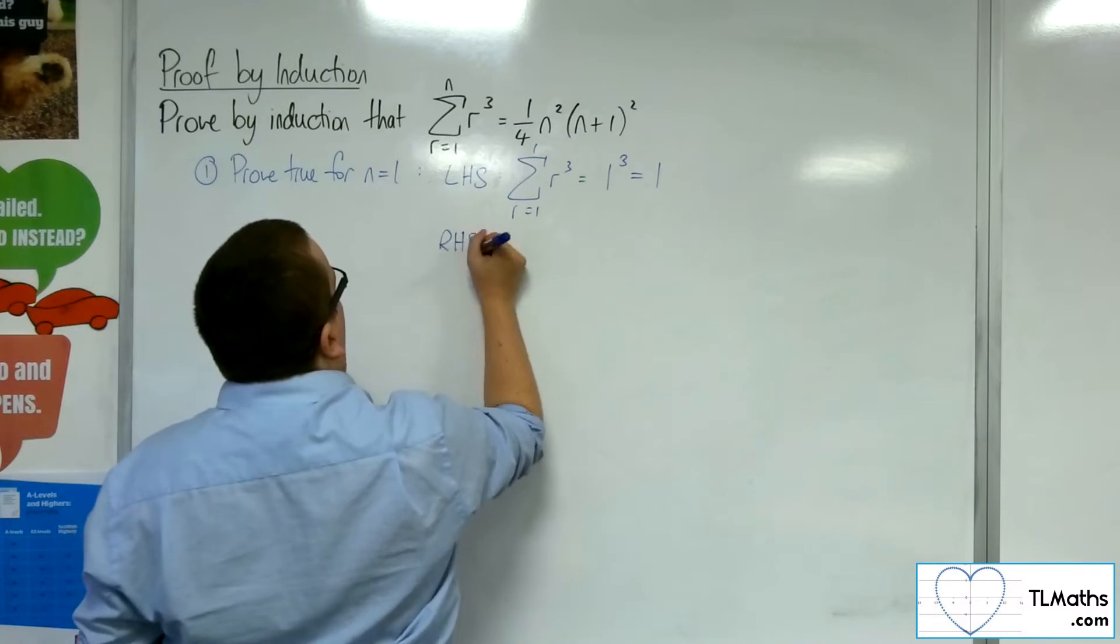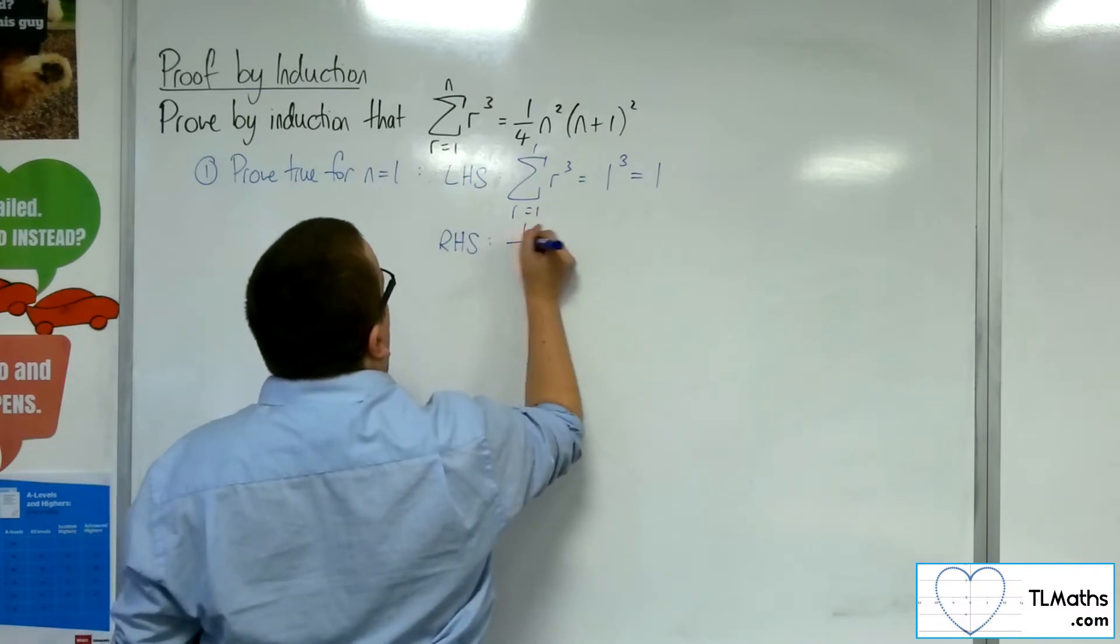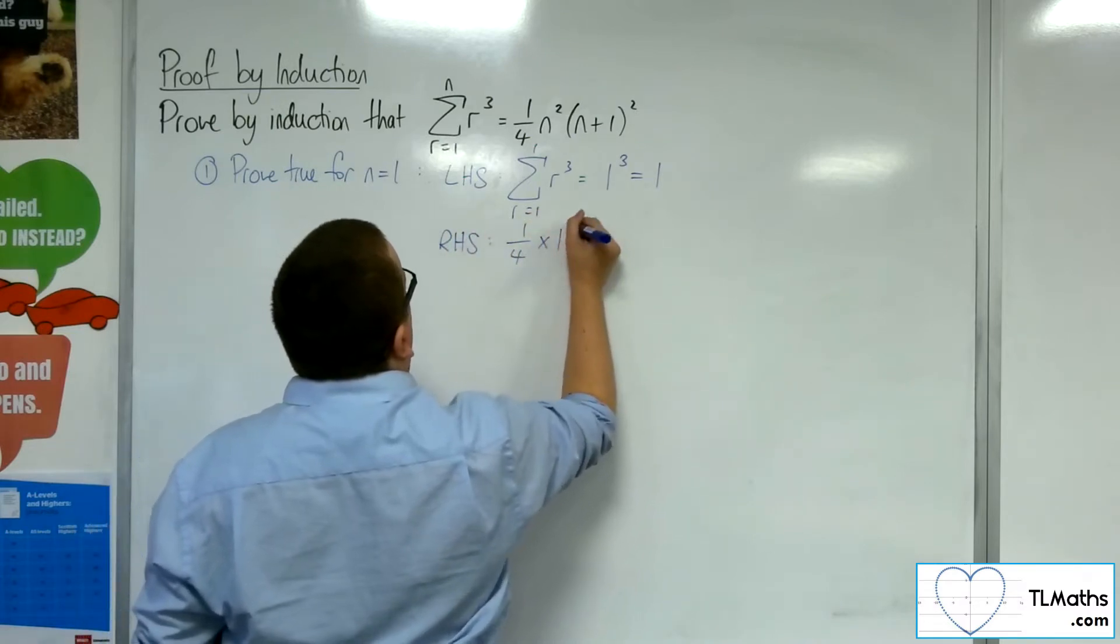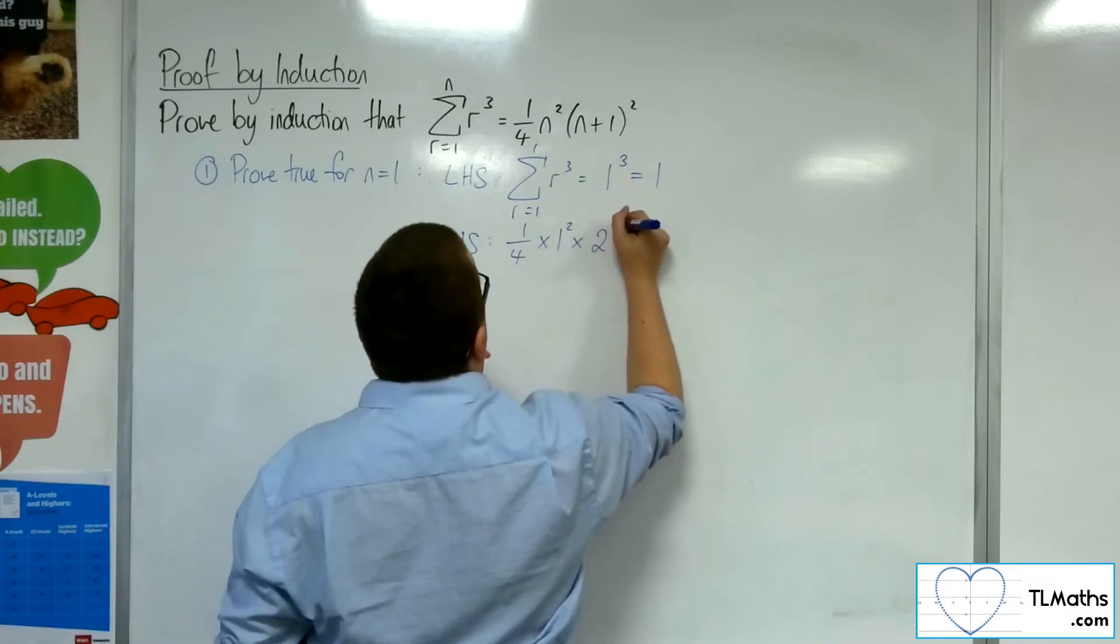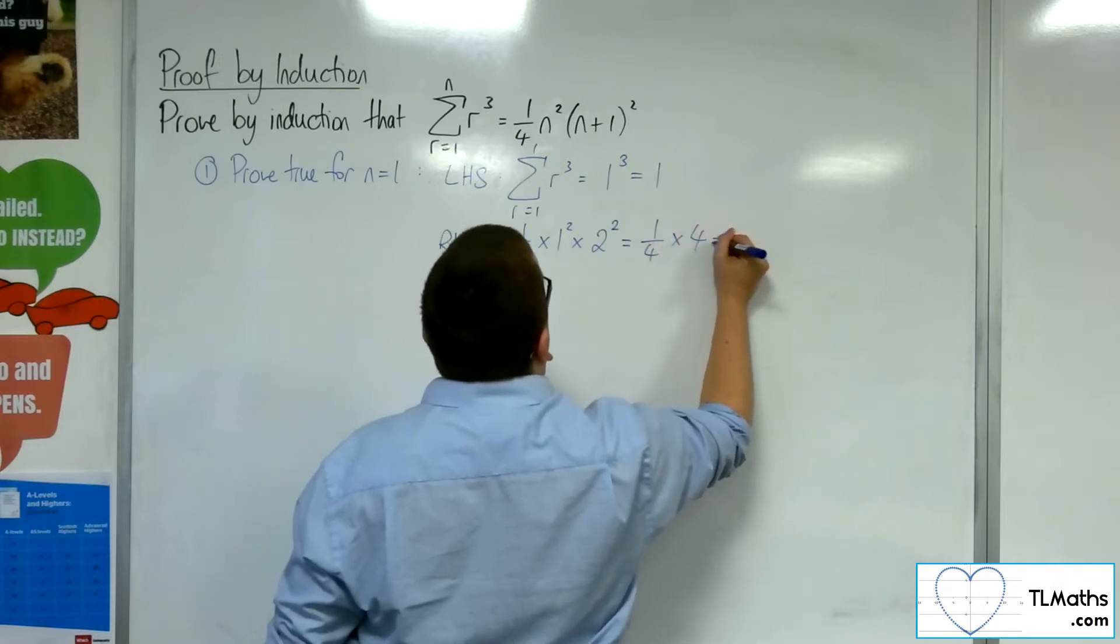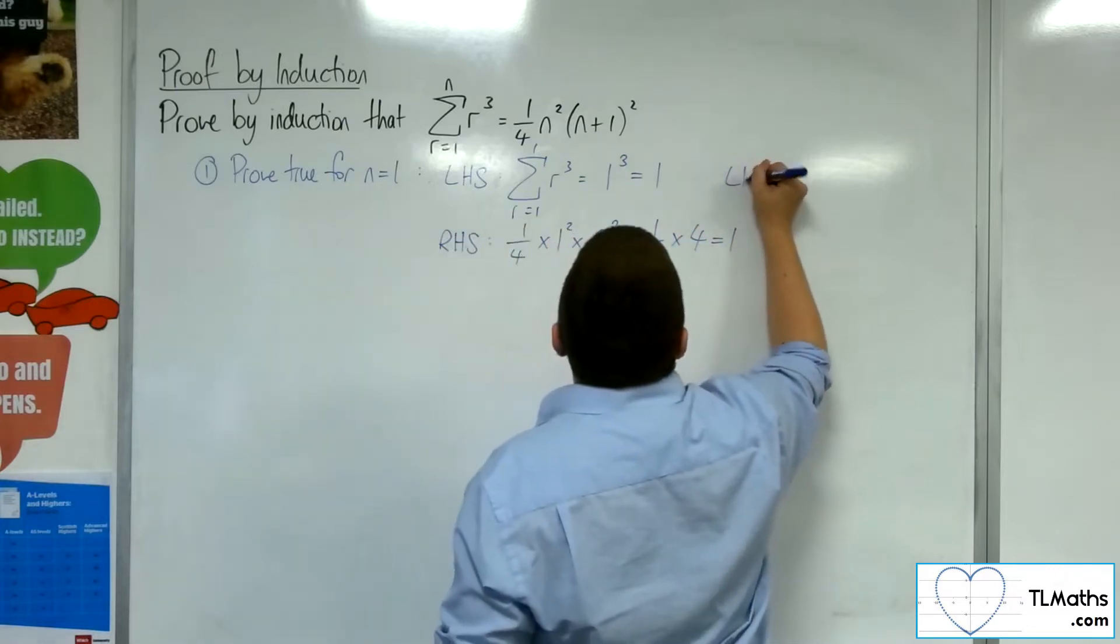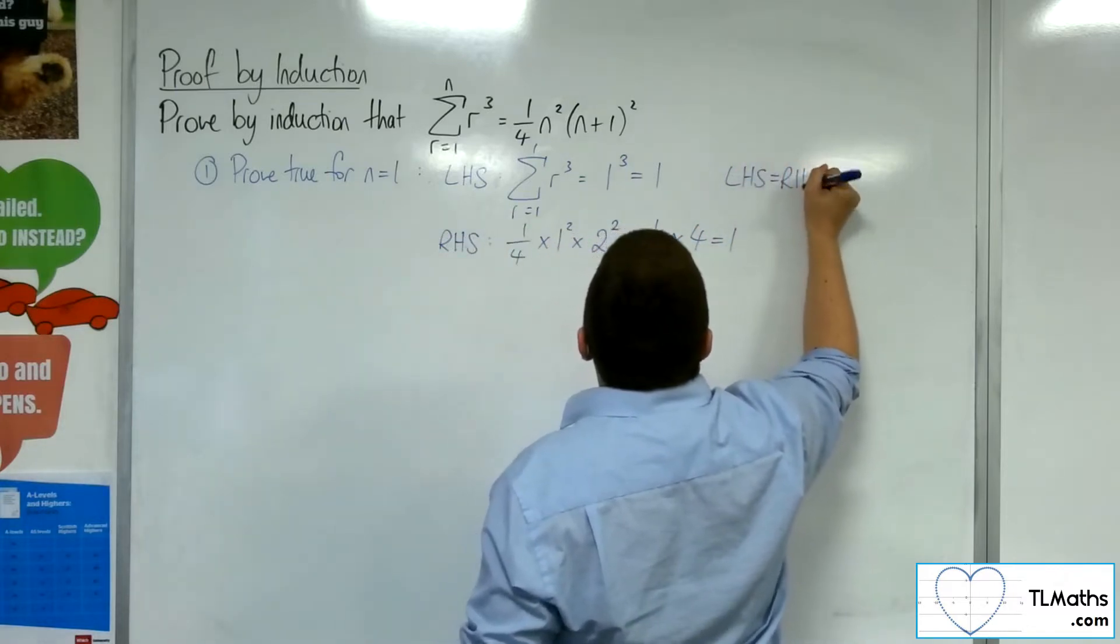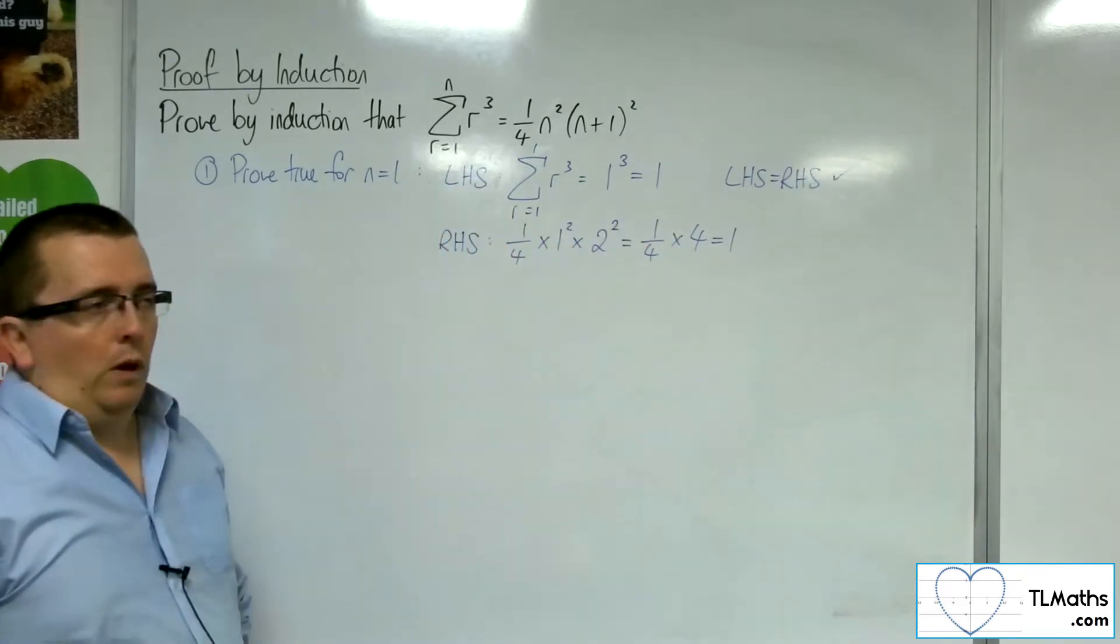For the right-hand side, substituting in the 1, I get 1 quarter times 1 squared times 1 plus 1 squared is 2 squared. So that's a quarter times 4, which is 1. So we've got the left-hand side equals the right-hand side, and so it is true for n equals 1.